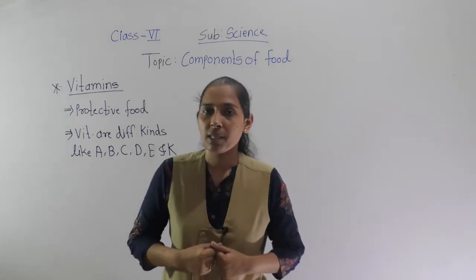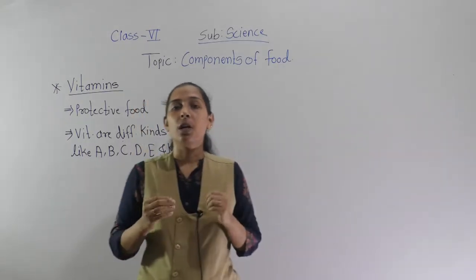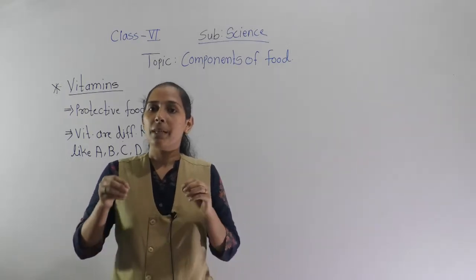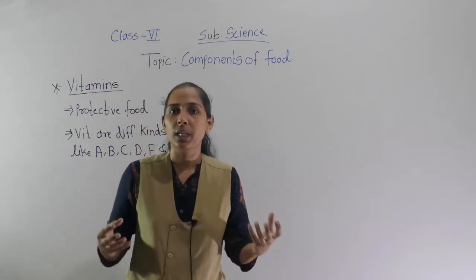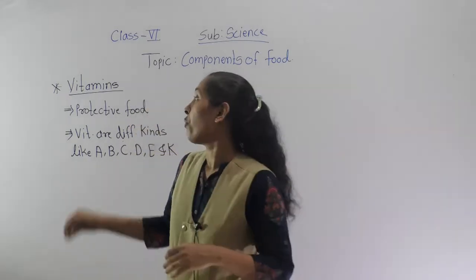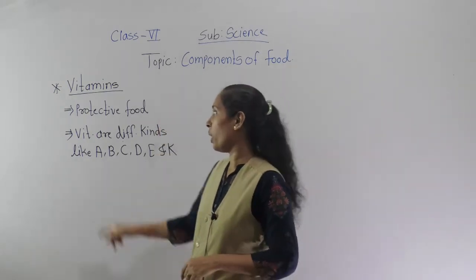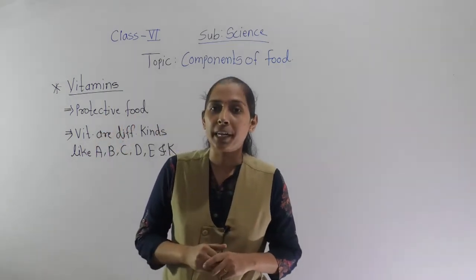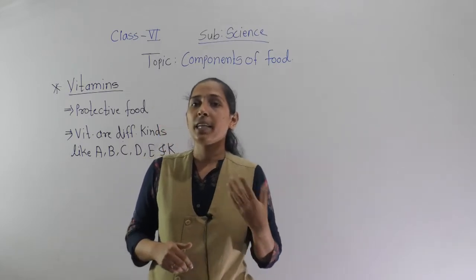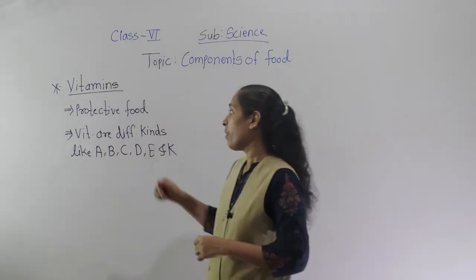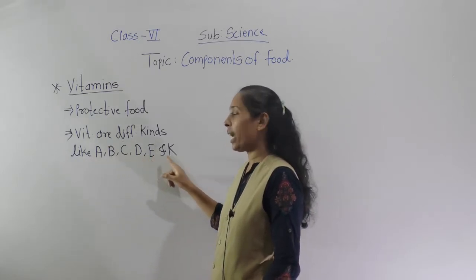Let's see why vitamins are necessary, where we get them, and what their functions are. Vitamins are necessary for our body, but in a very small quantity. Even so, they perform a vital role in our diet because vitamins help our body fight against different diseases. That is why vitamins are called protective food. The different kinds of vitamins are vitamin A, B, C, D, E, and K.